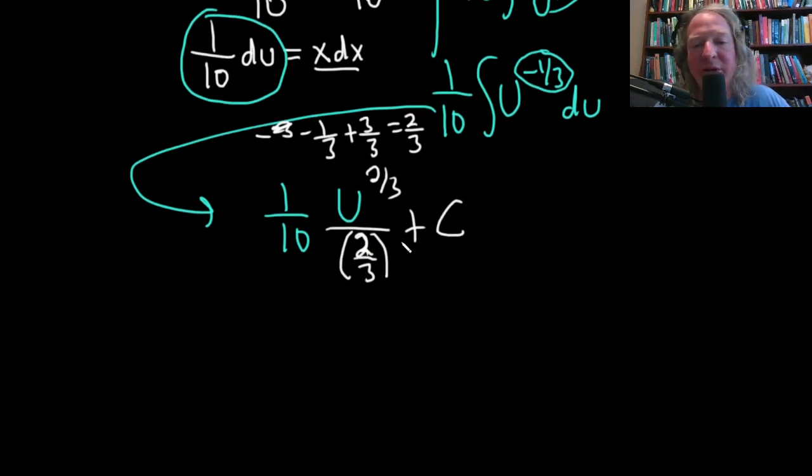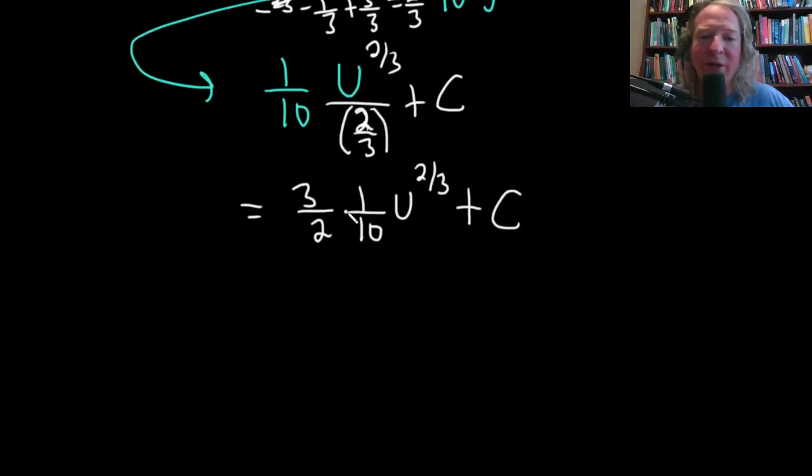Dividing by 2 thirds is the same thing as multiplying by the reciprocal. So this is 3 halves times 1 tenth. And then here we have the u to the 2 thirds. I'll leave it like that for now. We can multiply. 3 times 1 is 3. 2 times 10 is 20.